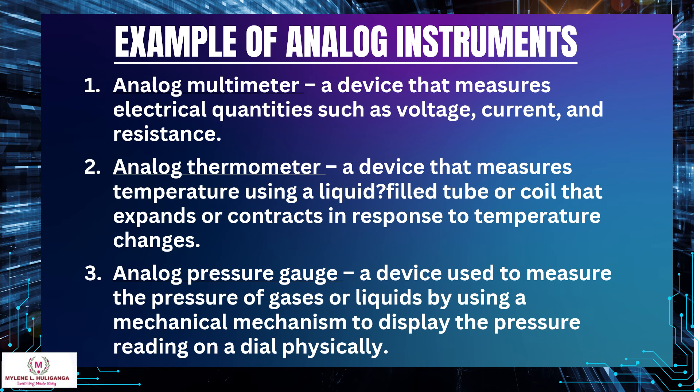Examples of analog instruments: 1. Analog multimeter — a device that measures electrical quantities such as voltage, current, and resistance. 2. Analog thermometer — a device that measures temperature using a liquid-filled tube or coil that expands or contracts in response to temperature changes.